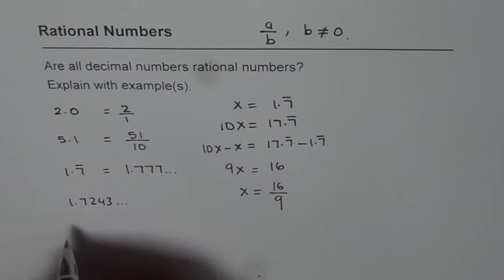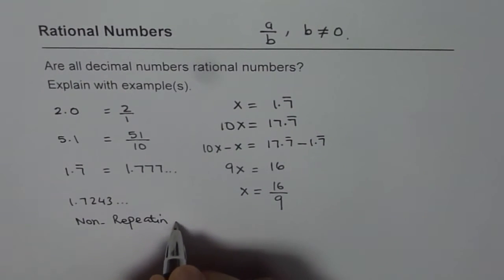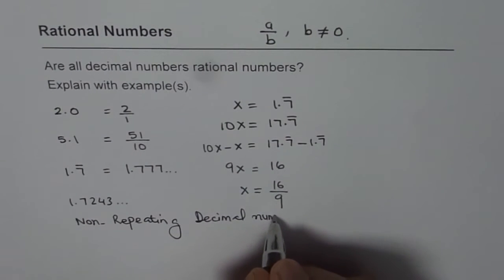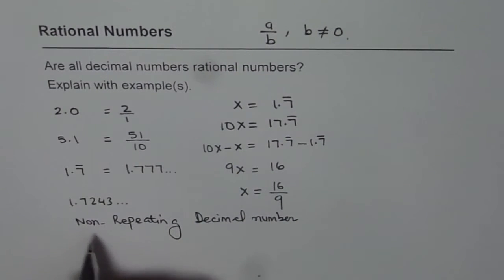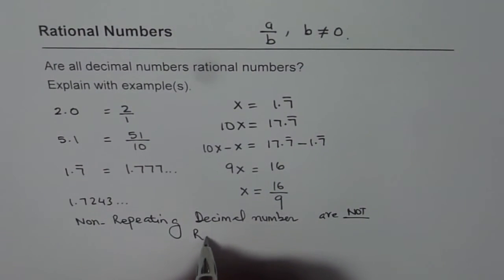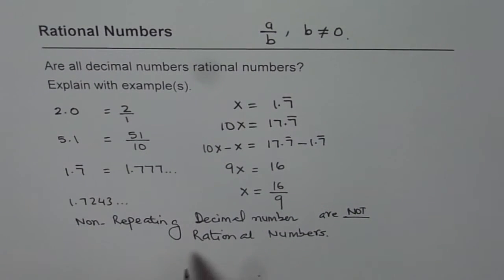So, these non-repeating decimal numbers are not rational numbers. Since we cannot write them in the form of a over b, they are not rational numbers, so these are exceptions to the rule.